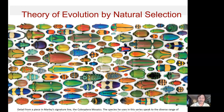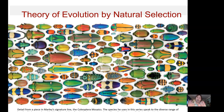We're starting our first section on evolution — chapter 22 — divided into three lectures. We begin with an introduction to evolution, starting with a picture showing a variety of insects, nearly all beetles in the order Coleoptera. You can see this huge diversity in shapes, colors, and sizes. As biologists, we explain this diversity through the theory of evolution, and the main factor we'll discuss is natural selection.